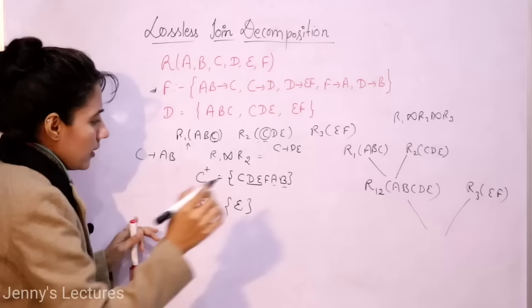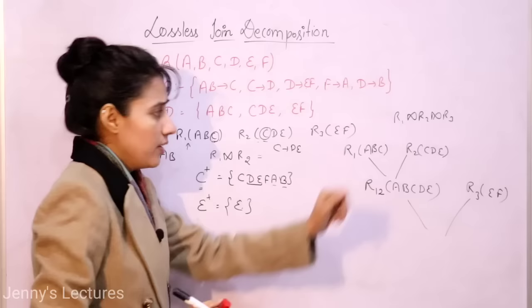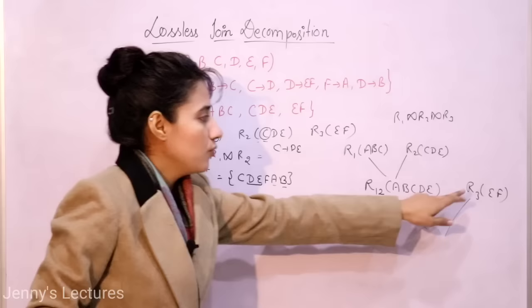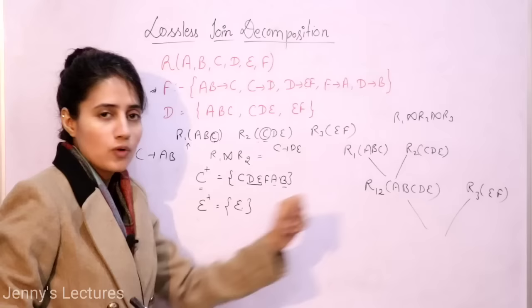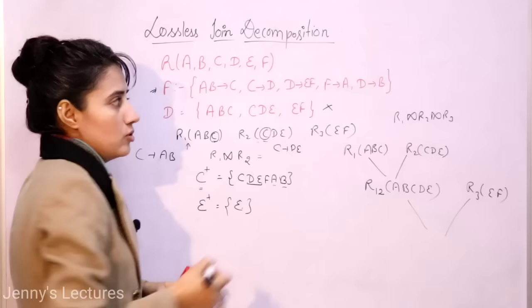Using E we cannot derive anything new, so E closure contains only E. E cannot drive all attributes of R12 — for example, E cannot drive F either. So E is neither a candidate key for R12 nor for R3. Therefore this decomposition is not lossless — it is a lossy decomposition.